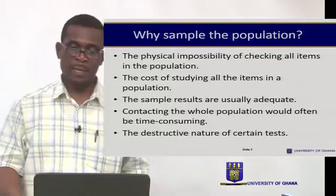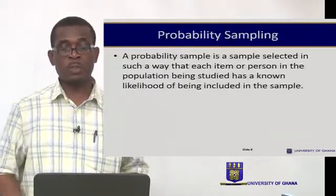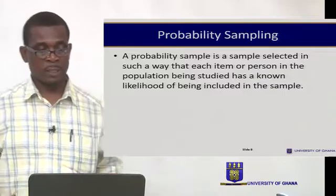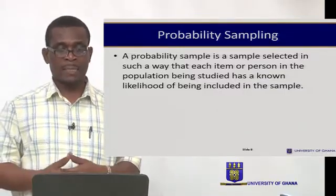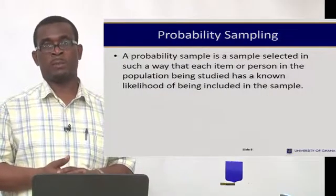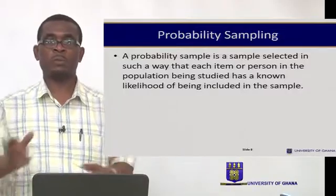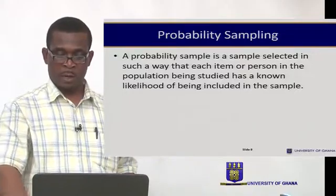These are very good reasons why we take samples. Sometimes you can take samples in a probability sense. We talk about what we call probability sampling, where a sample is selected such that each element or person in the population has a known likelihood of being included. So we want to be as fair as possible — sometimes you do what we call simple random sampling.